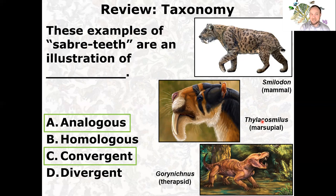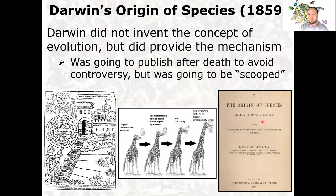Make sure you understand the difference between analogous and homologous, and convergent versus divergent evolution. Let's talk about micro evolution specifically, which is generally the level at which we understand evolution. At the end of the lecture, I'll distinguish between micro evolution and macro evolution.